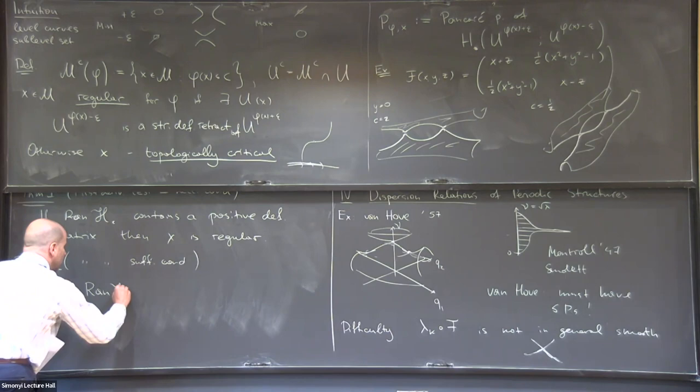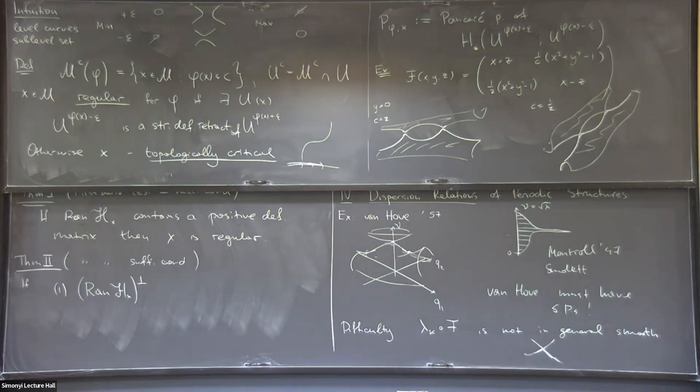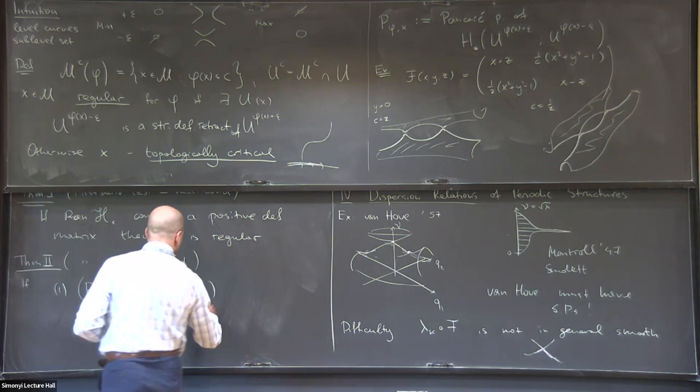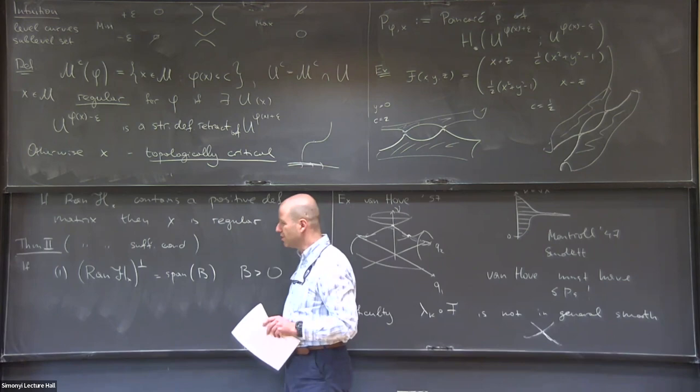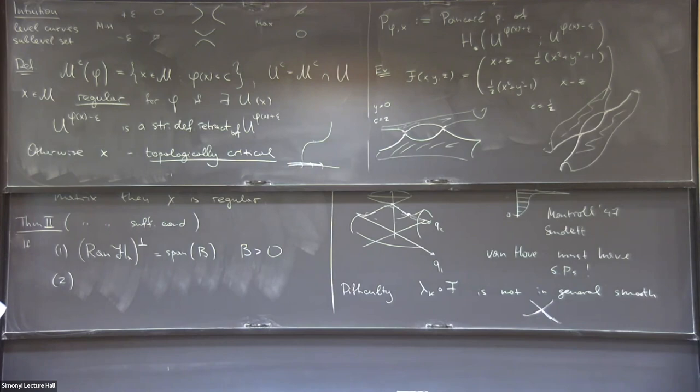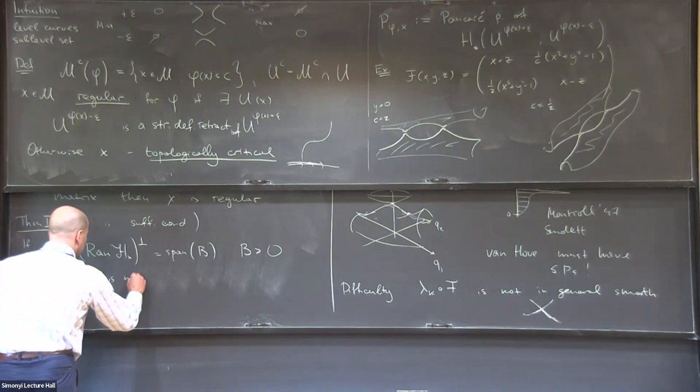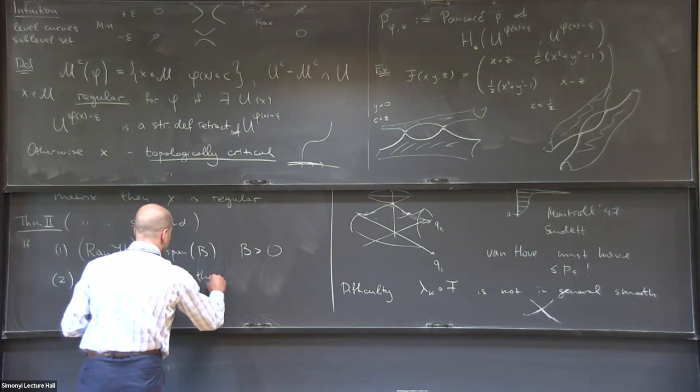The way it's proved is by using Clarke's subdifferential, and then there is a link between the Clarke differential and algebra. Theorem two is a first derivative test — a sufficient condition. So theorem one should be viewed as a necessary condition for a critical point: that the range does not contain a positive definite matrix. Theorem two gives a sufficient condition: if the orthogonal complement of the range of H is spanned by a positive definite matrix and is one-dimensional, and x is non-degenerate in the smooth direction, then x is topologically critical.